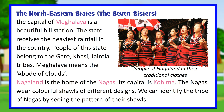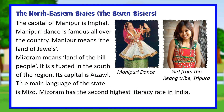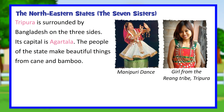Nagaland is the home of the Nagas, with Kohima as its capital. The Nagas wear colorful shawls of different designs, and the tribe of a Naga can be identified by the pattern of their shawl. The capital of Manipur is Imphal; Manipuri dance is famous all over the country, and Manipur means the land of jewels. Mizoram means the land of the hill people; its capital is Aizawl, the main language is Mizo, and it has the second highest literacy rate in India. Tripura is surrounded by Bangladesh on three sides, with Agartala as its capital, and the people make beautiful things from cane and bamboo.